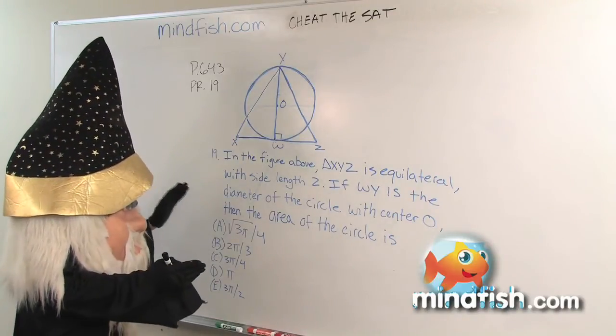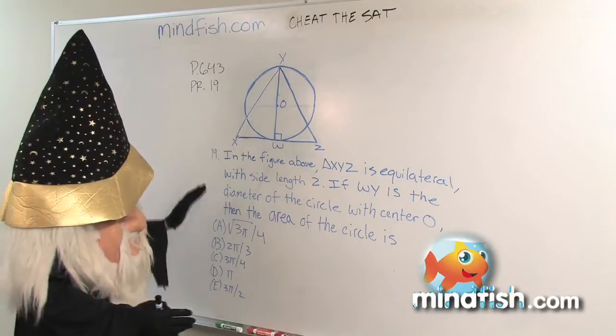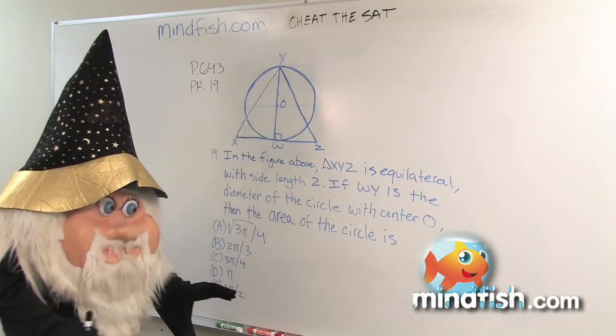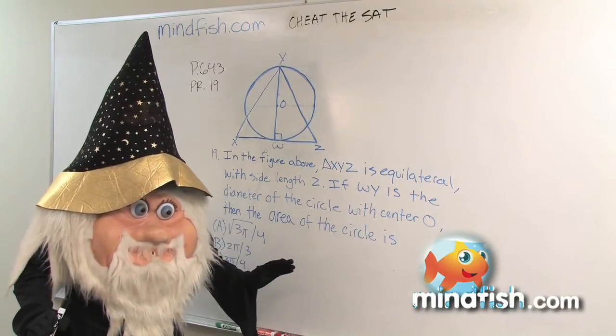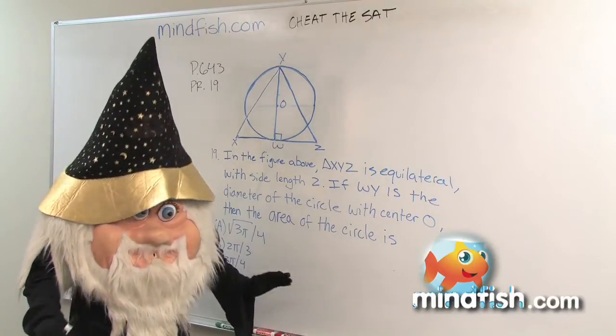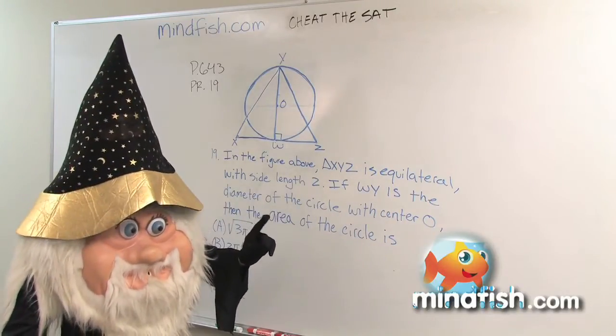We're going to be able to do a problem that is a hard problem on the SAT, problem 19, page 643, without actually doing any math. And that's why this is straight up cheating. Again, it is not illegal though. You can do this.